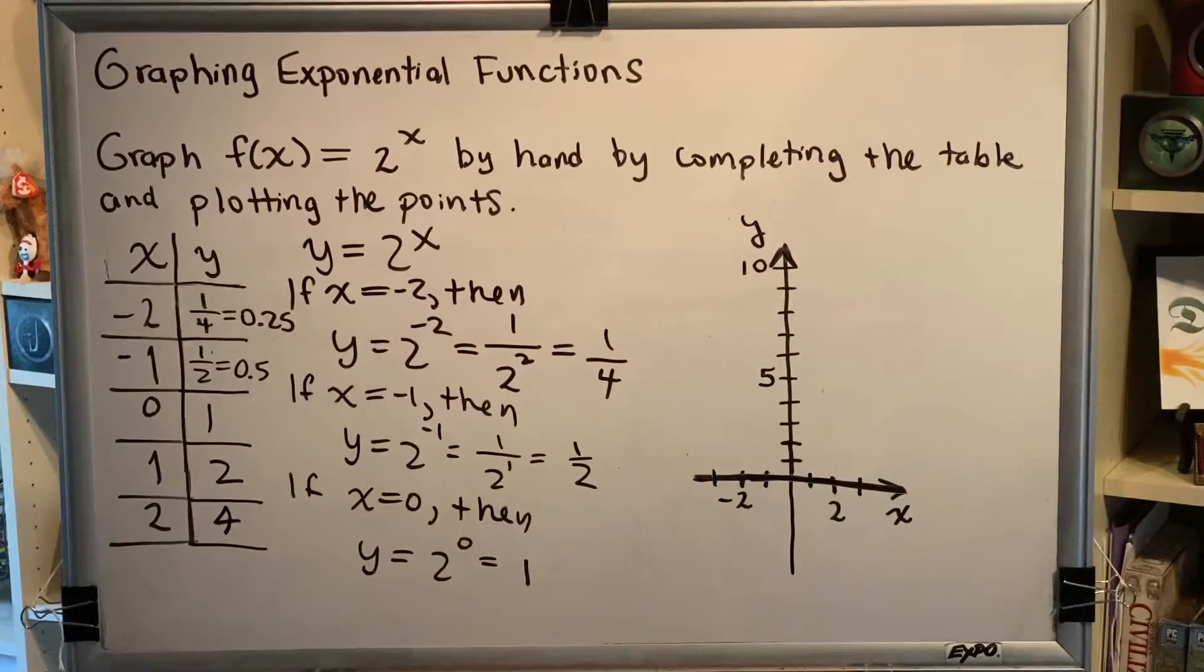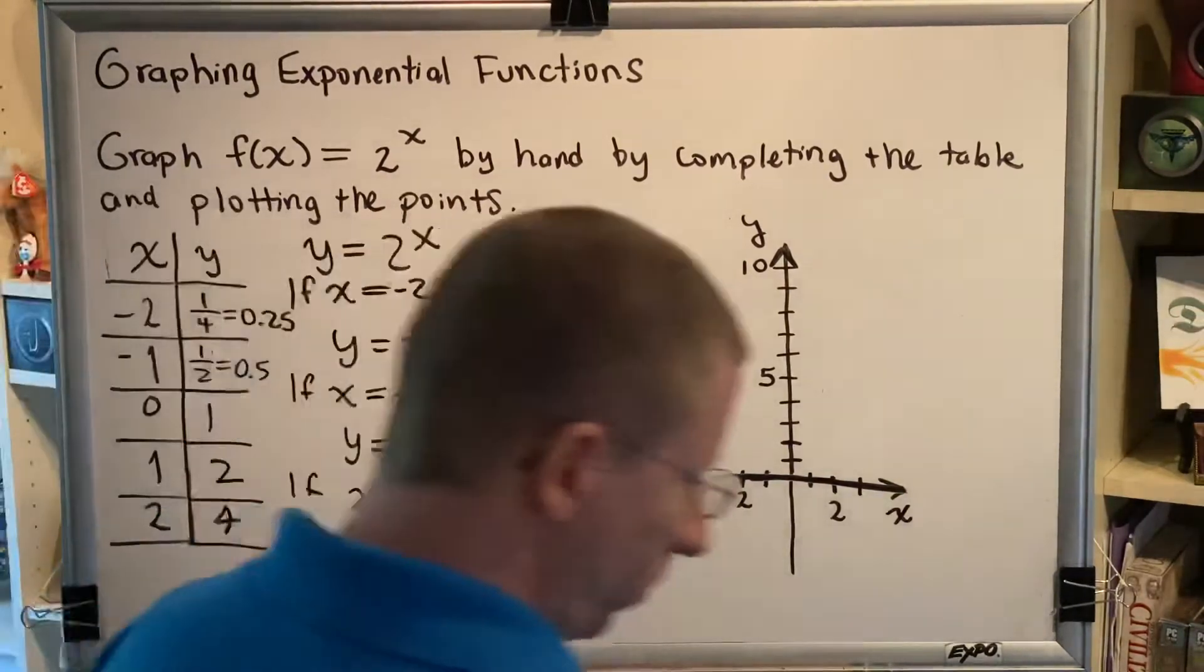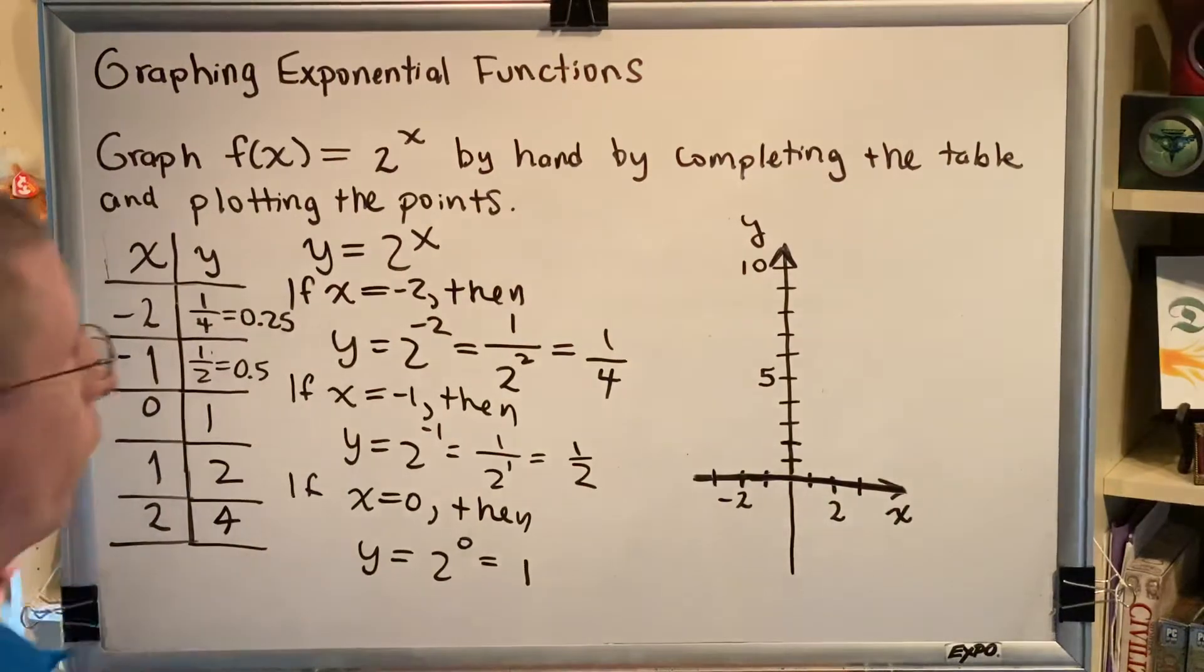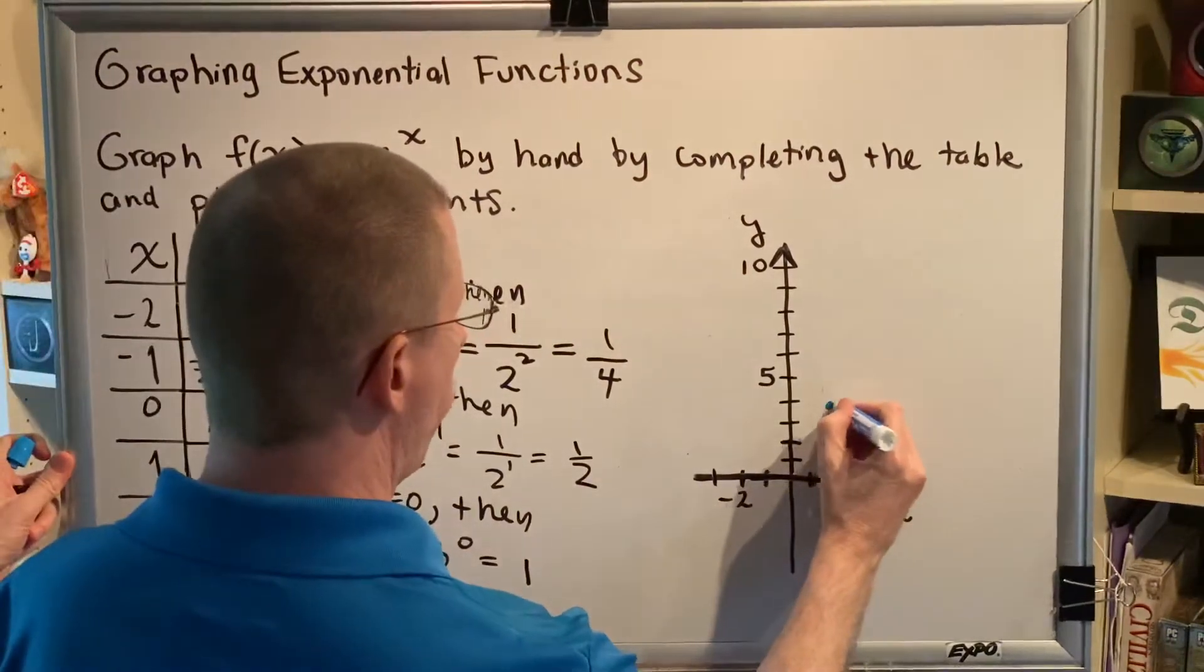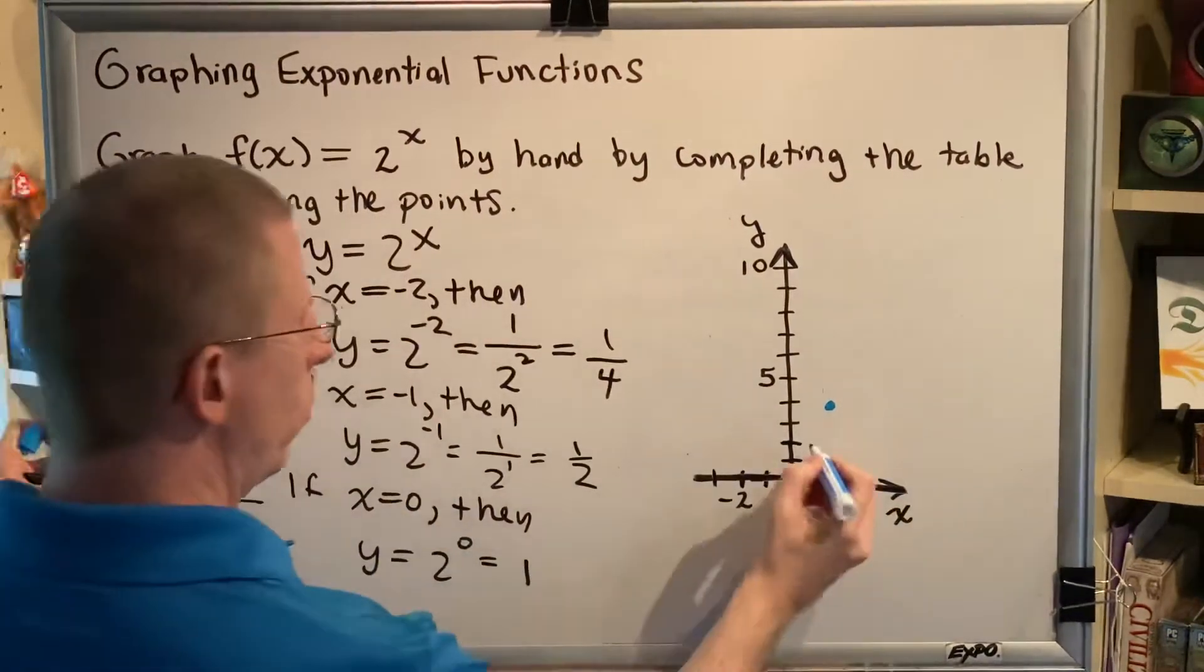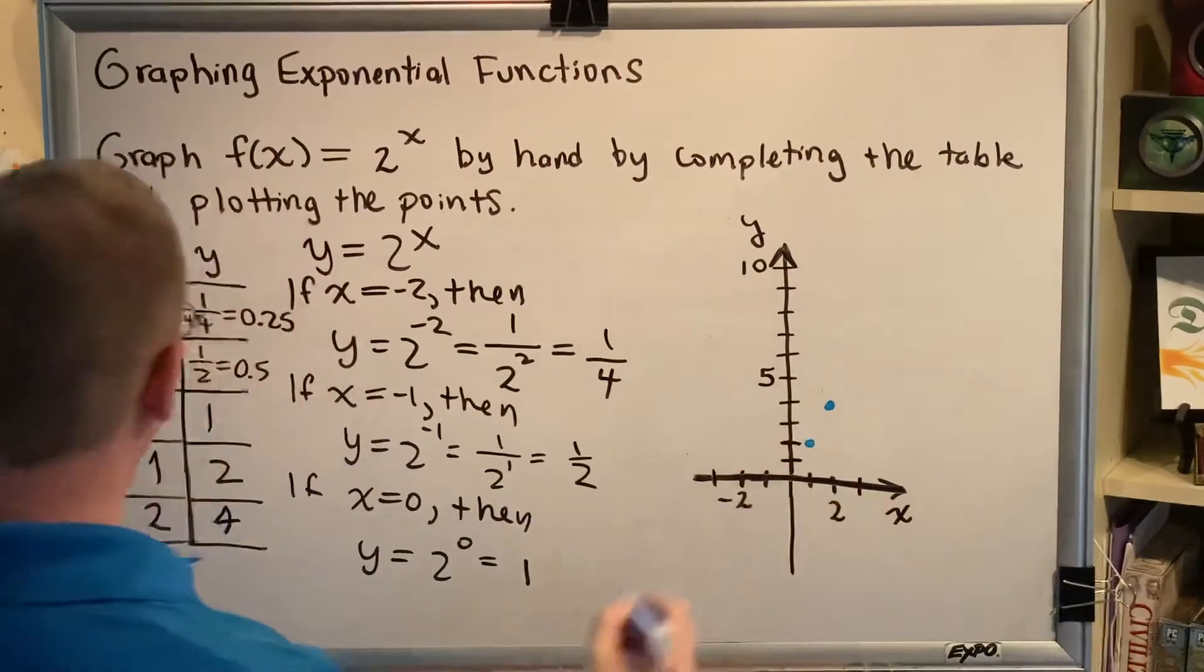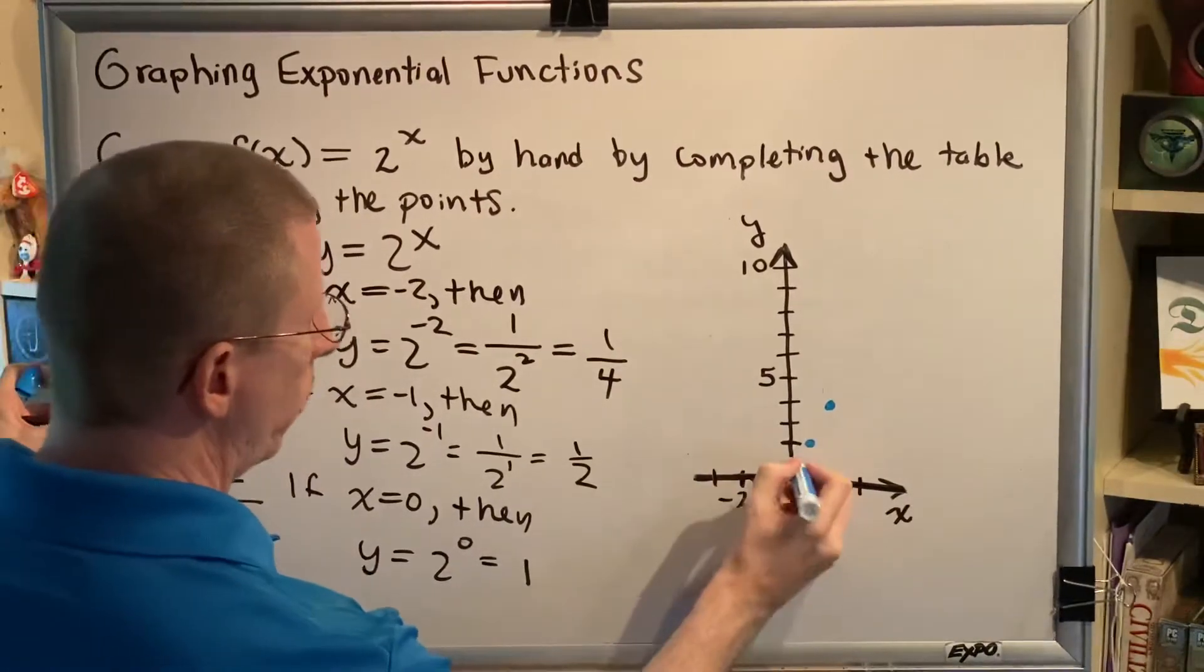Now we're going to plot all of our points. Let's start with the easy ones first: (2,4) which would be here, (1,2) which would be here, and (0,1) which would be here.